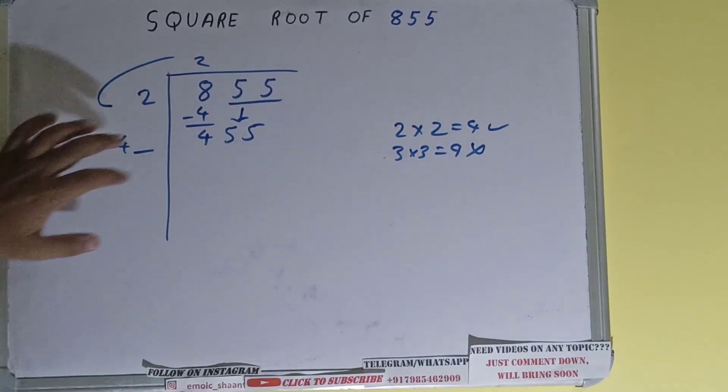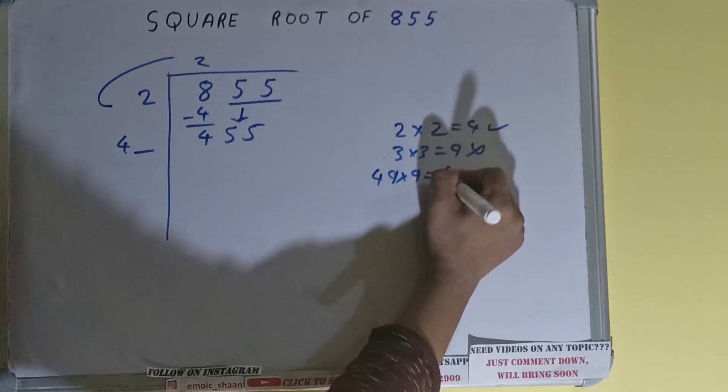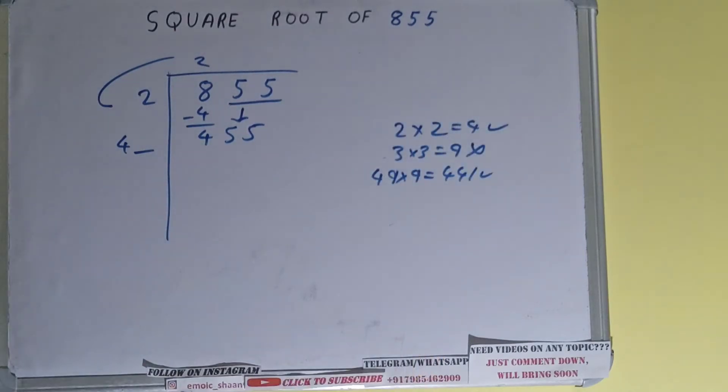Now whatever number we write here we have to write here also. So if we try 9 times, that is 49 into 9, it will be 441 and that is good to take.